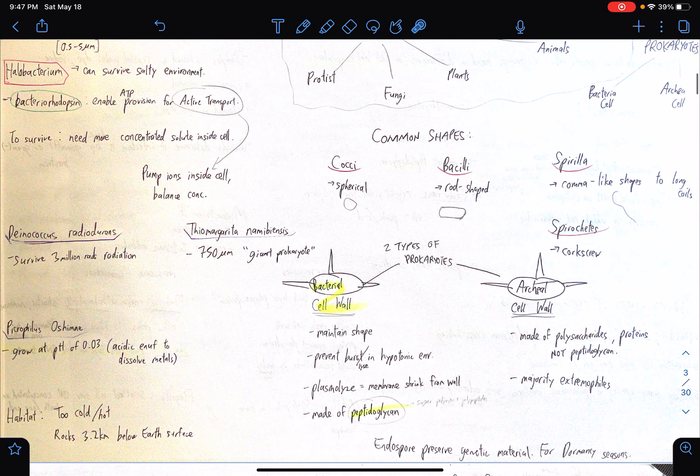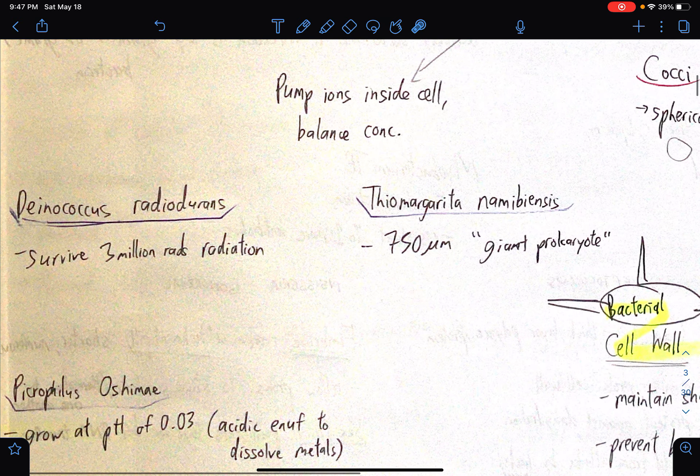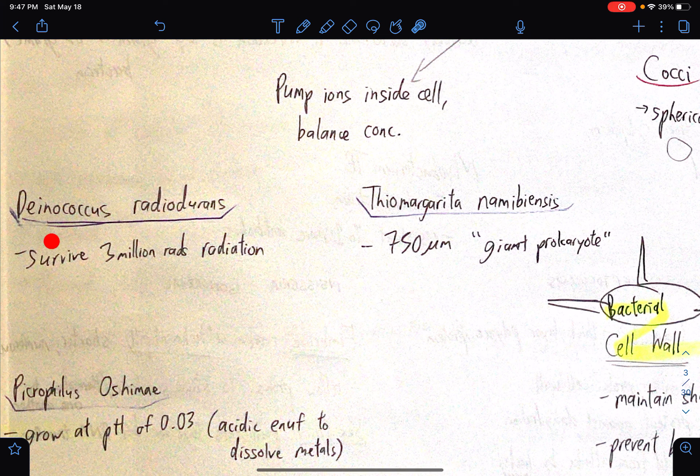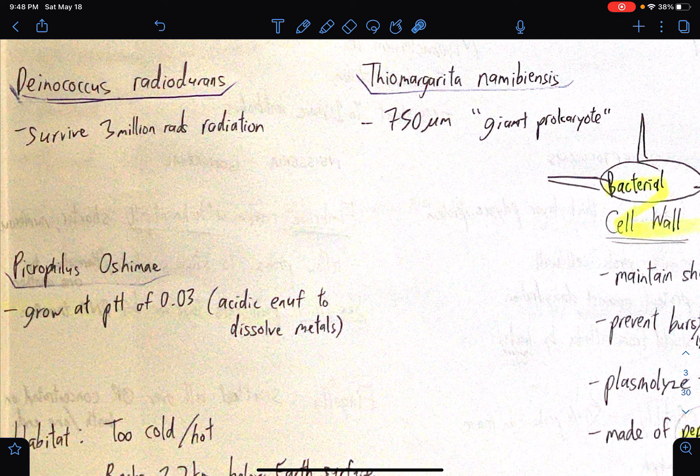Are we finished? Not yet. Let's cite some examples of prokaryotes, like specific ones. We have Deinococcus radiodurans. So these prokaryotes are capable of surviving 3 million rads of radiation. For Thiomargarita namibiensis, so it's usually nicknamed the giant prokaryote. The size is 750 micrometers. So if it's not the biggest prokaryote, then it's at least one of the biggest.